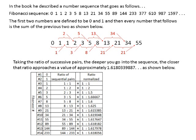Now, taking the ratio of successive pairs, the deeper you go into the sequence, the closer that ratio approximates a value of 1.618039887... and so on — it's one of those irrational numbers that doesn't repeat and goes on forever, as shown below.